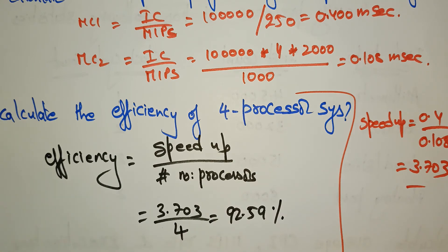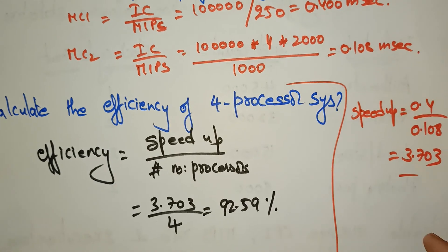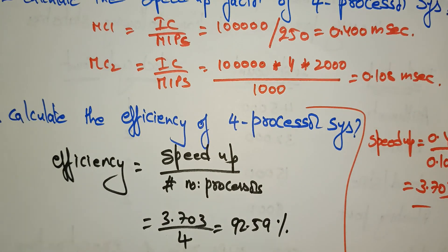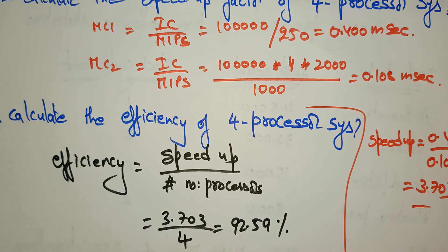In this way, you just apply the formulas. Whatever formulas I explained — cycles per instruction, how to calculate MIPS, efficiency, and throughput — by applying all those formulas, you can easily find the efficiency, speed-up, throughput, and how many cycles per instruction a system is taking. Thank you.